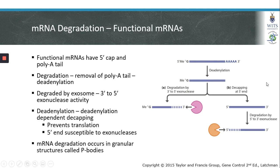Functional mRNAs in the cytoplasm contain a 5' cap and a poly-A tail, and these post-transcriptional modifications protect these mRNAs from degradation. Therefore, before an mRNA in the cytoplasm can be degraded, it must first be deadenylated. Once an mRNA is deadenylated — this involves removal of the poly-A tail — it can then be degraded.